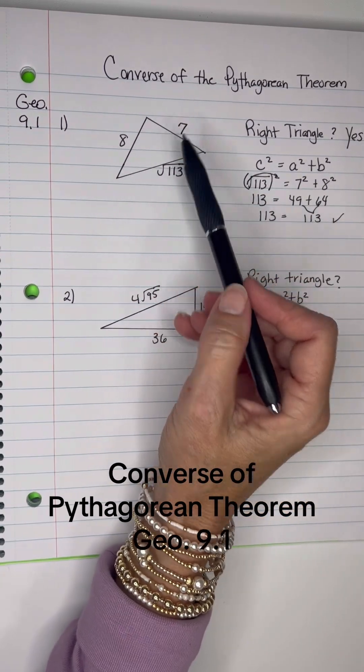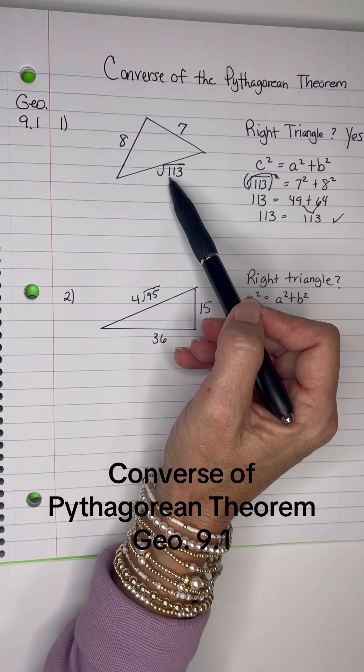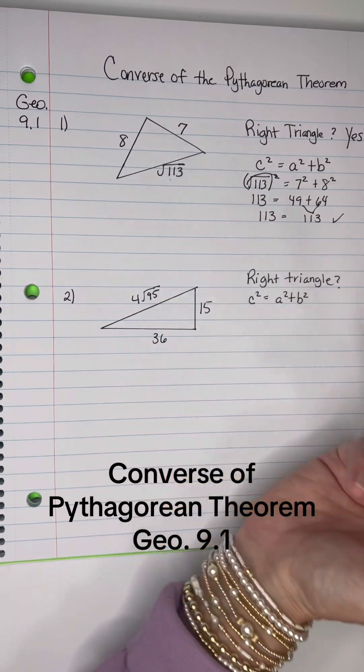Now, this is not a Pythagorean triple because that radical sign in that 113. We talked about the Pythagorean triples in the last video.